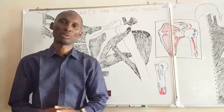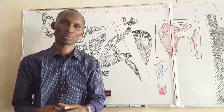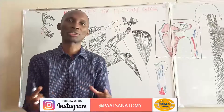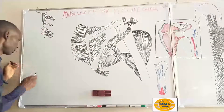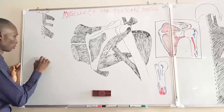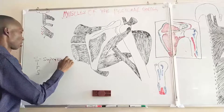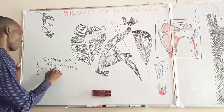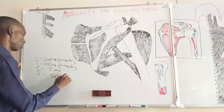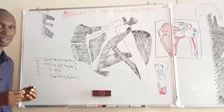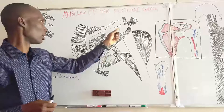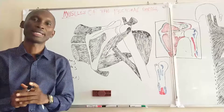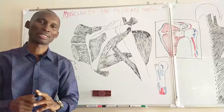The next muscle we will look at is the supraspinatus. Before we start, it is useful to introduce four muscles that help stabilize the shoulder joint — we call these the rotator cuff muscles, or SITS muscles. The four are: supraspinatus, infraspinatus, teres minor, and subscapularis. These four muscles form a cuff around the head of the humerus, and this cuff helps to stabilize the shoulder joint.